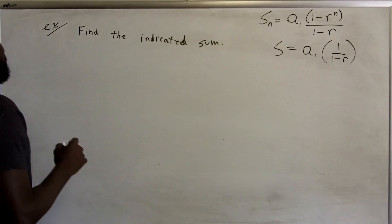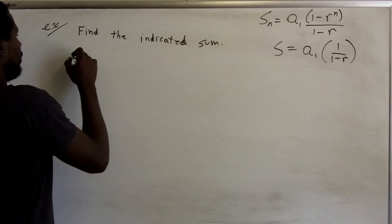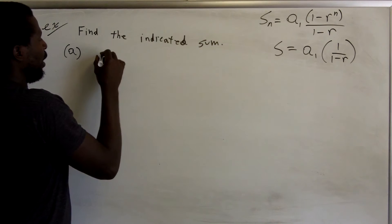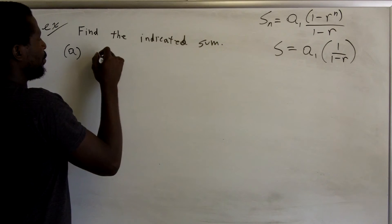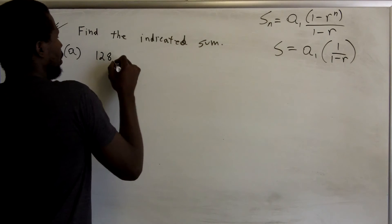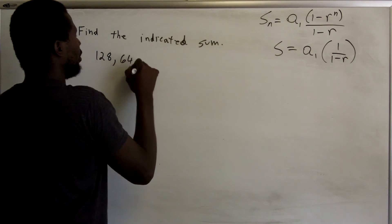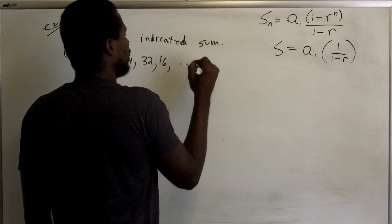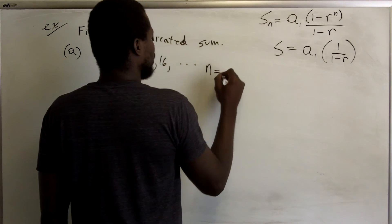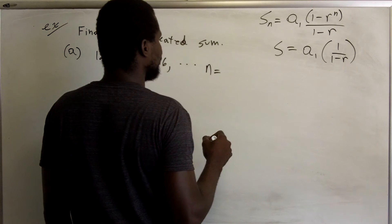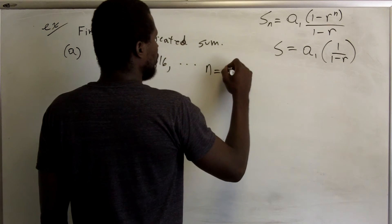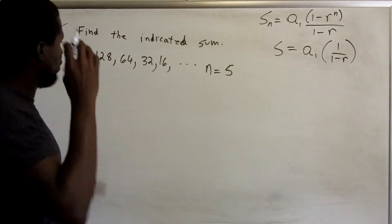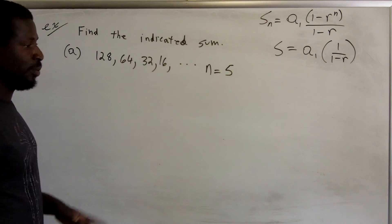Let's look at an example. For part A, we have the sequence 128, 64, 32, 16, and we want to find the fifth partial sum, S5. That's only one more term beyond the four listed, but this is just to illustrate the formula.